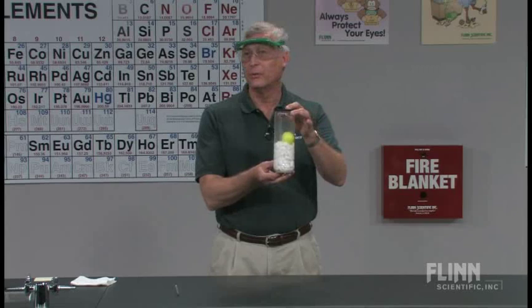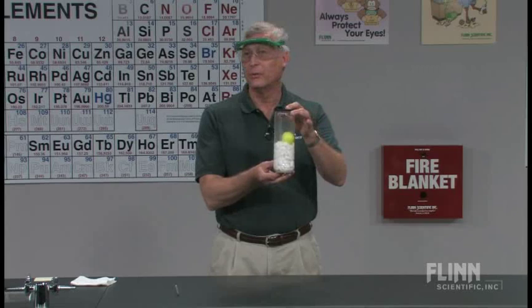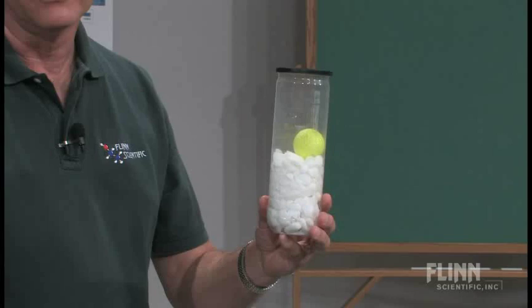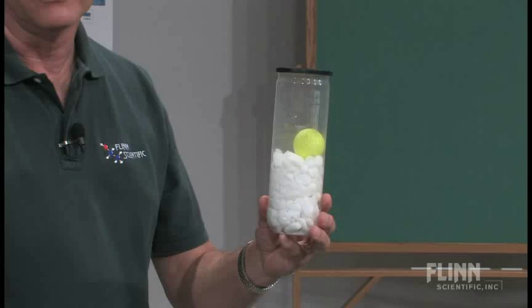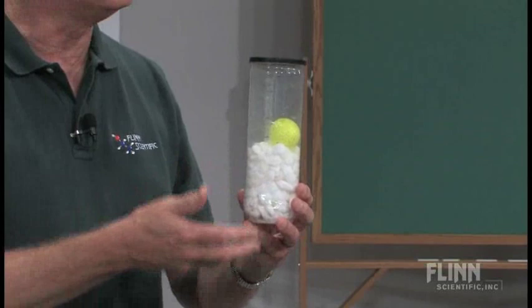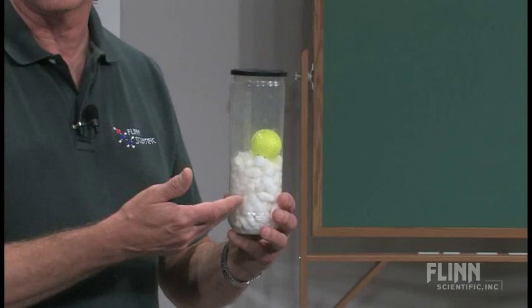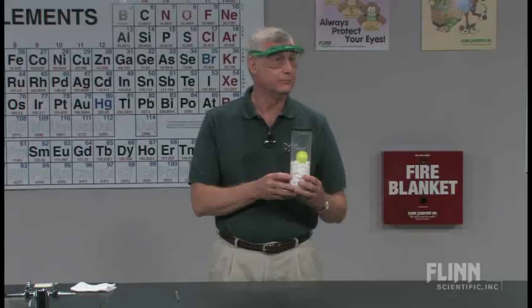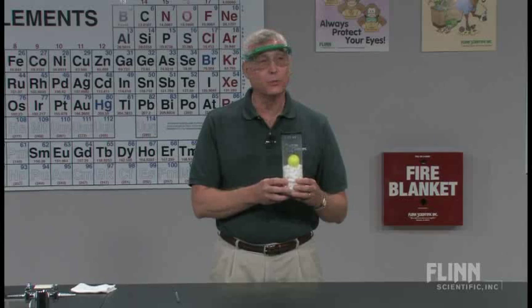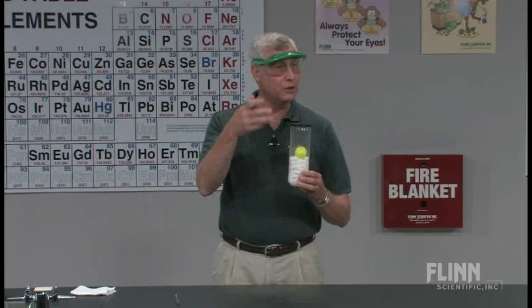We're going to start with observations. I ask the students, tell me what you observe. They'll say they see some salt and a golf ball. Knowing we're talking about density, I'll ask what they can tell me about the densities. Some students will say the salt is more dense than the golf ball because it's under the golf ball. Then another student will ask, are you sure? Or is it just because the salt was put in first and the golf ball couldn't move around?